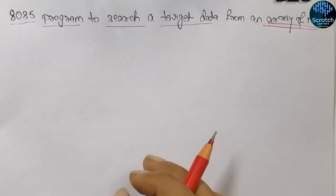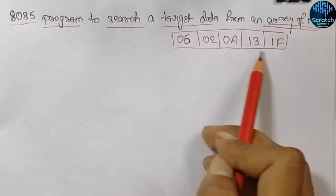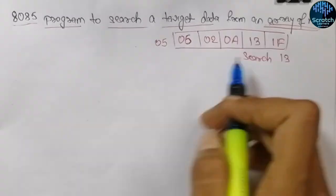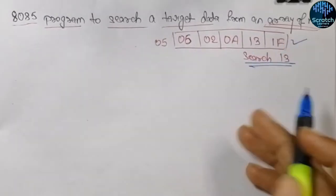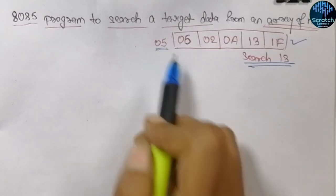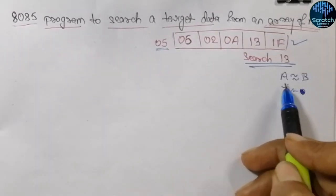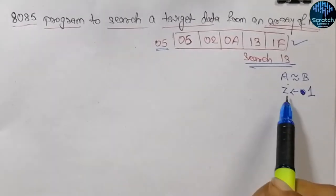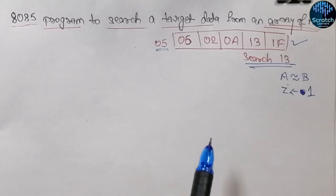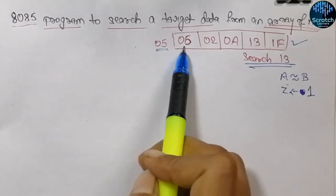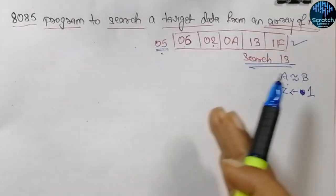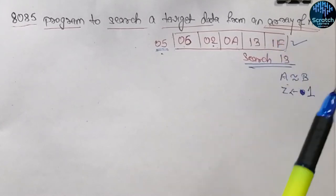We will use the concept of linear search in an array. Consider an example: this array consists of five elements and we need to search a specific data — let's say 13. We will input the first data of the array and compare it with the target element. While comparing two numbers, if they are equal the zero flag will be set, so by checking the zero flag we can find whether the two data are equal or not. If equal, the target element is found; if not, we move to the next element and repeat until found or we reach the end of the array.